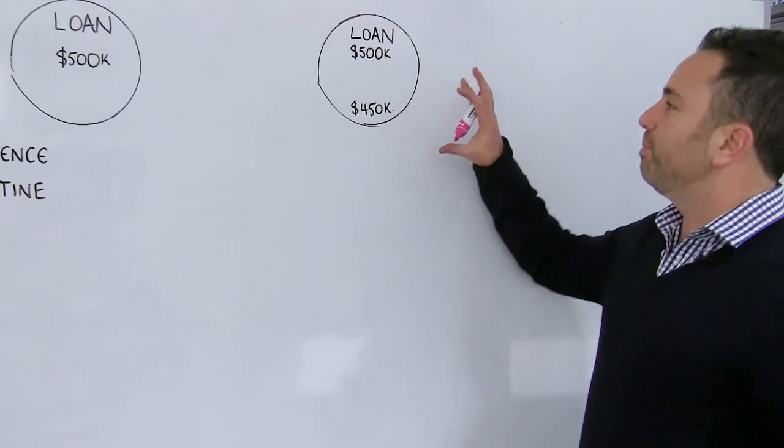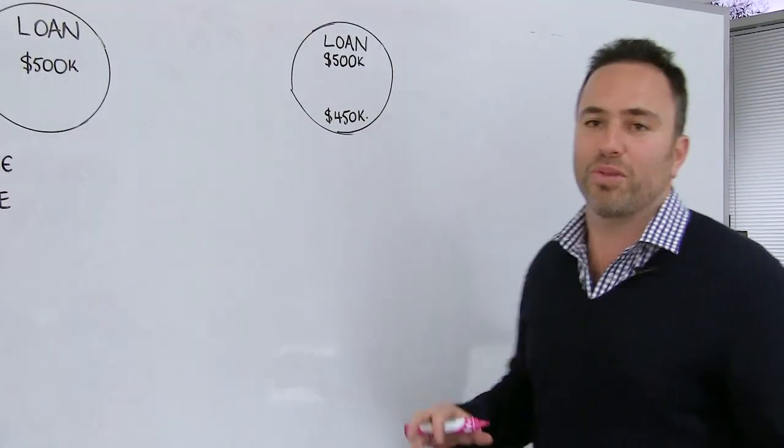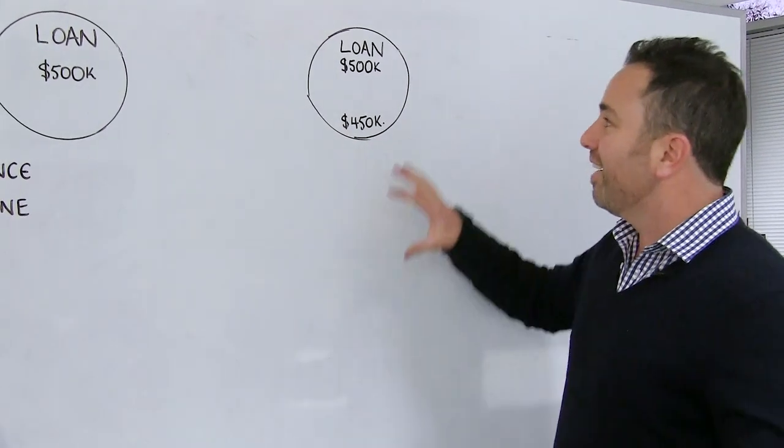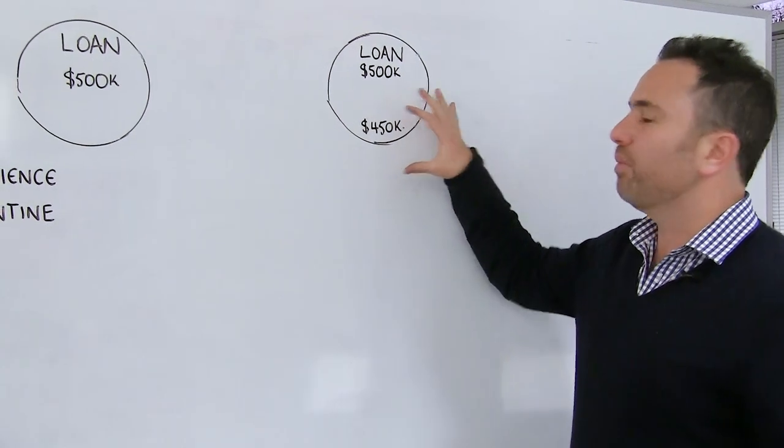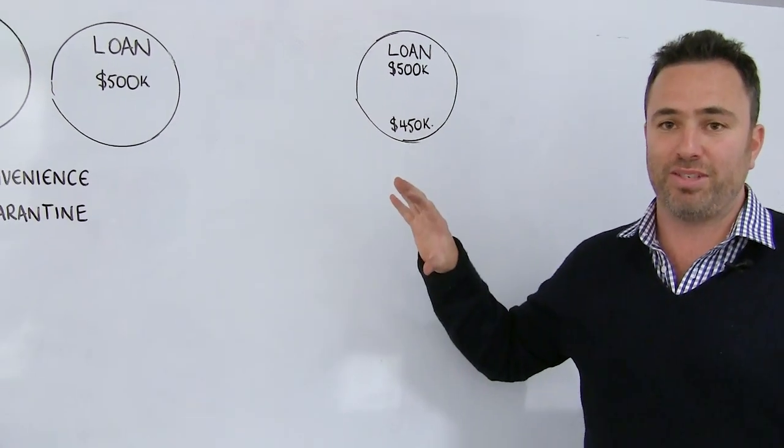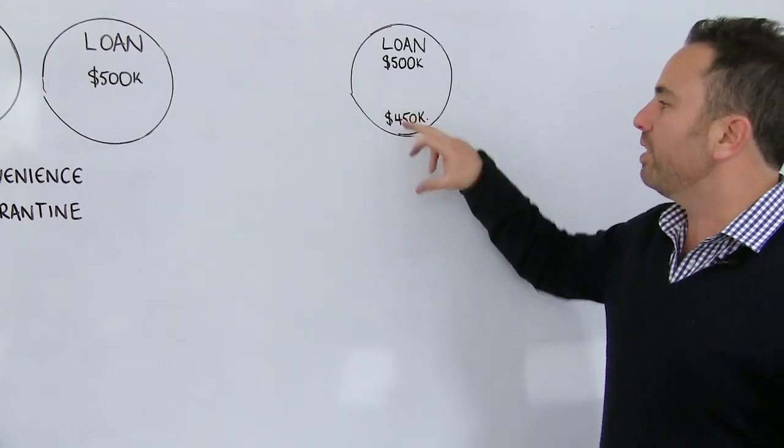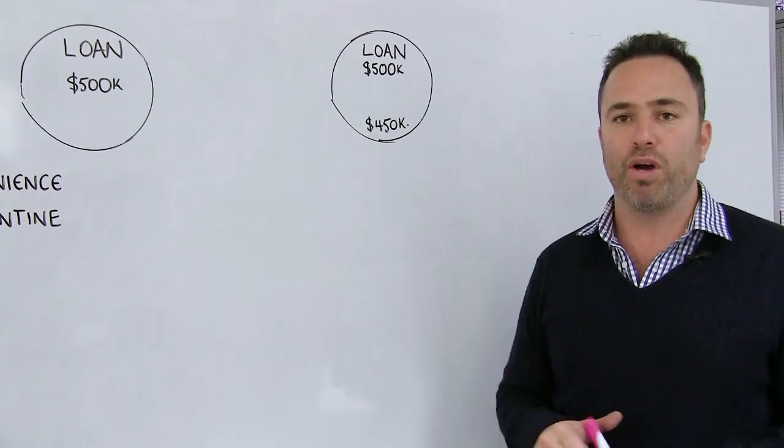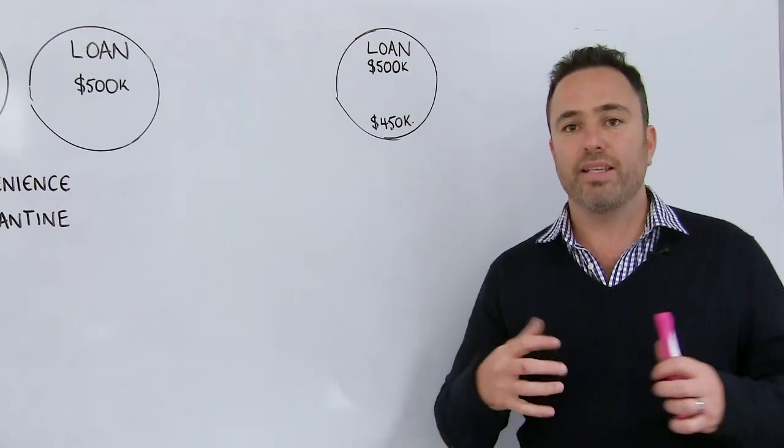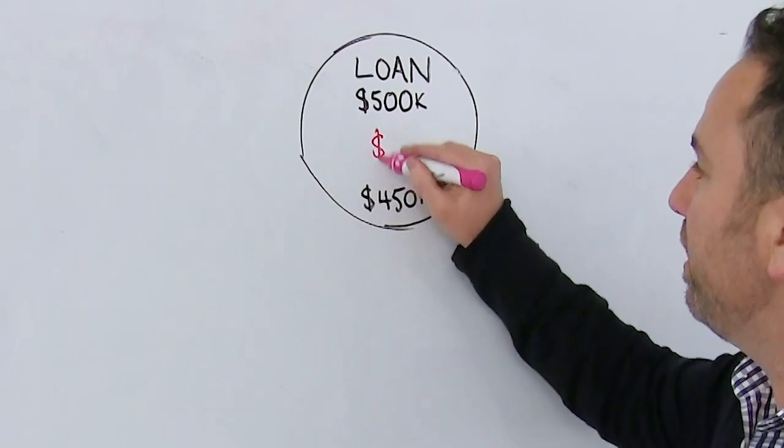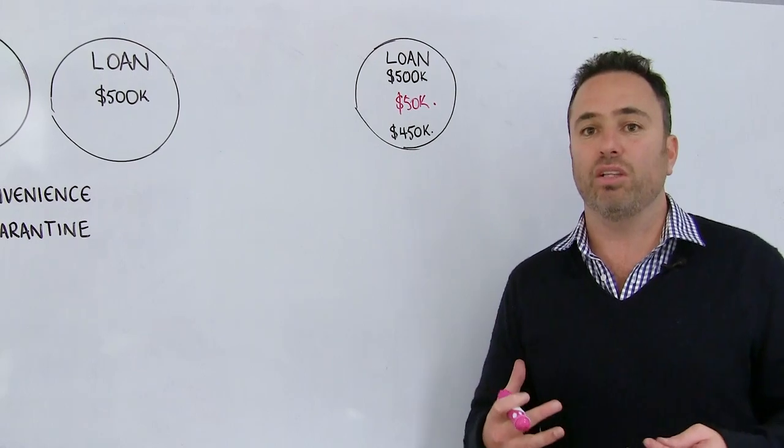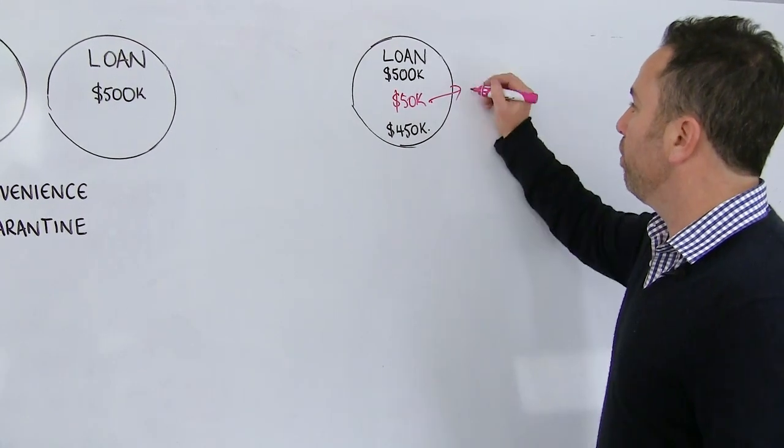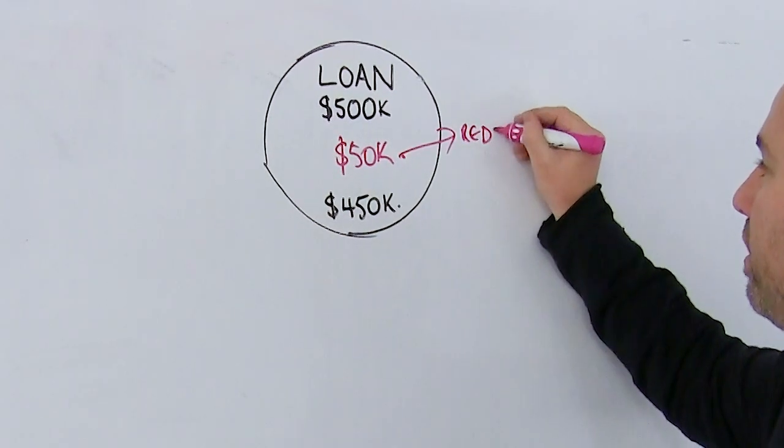Alright, I'm going to start with this perfectly rounded circle that I've previously produced for you. This represents a loan with a redraw facility. So I'm going to use an example of my favorite loan amount, $500,000. And what I've got down here is a balance of $450,000. So in this example, I've dumped $50,000 into the actual loan facility. And my access to that loan would normally be available through what's known as a redraw facility.